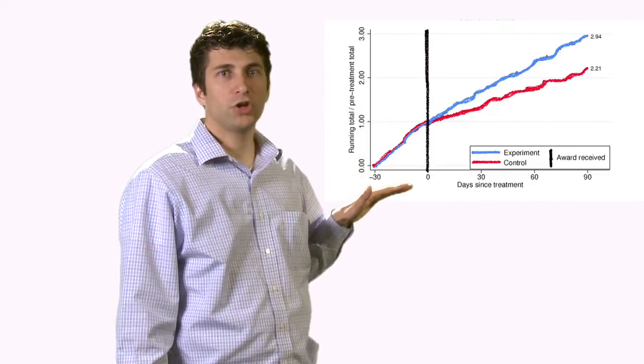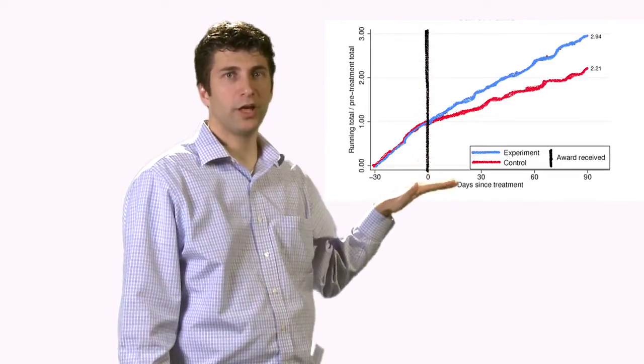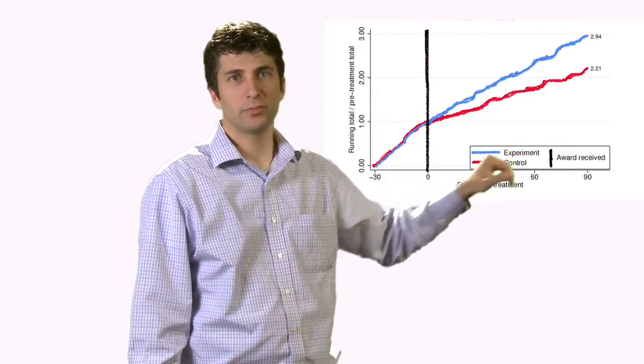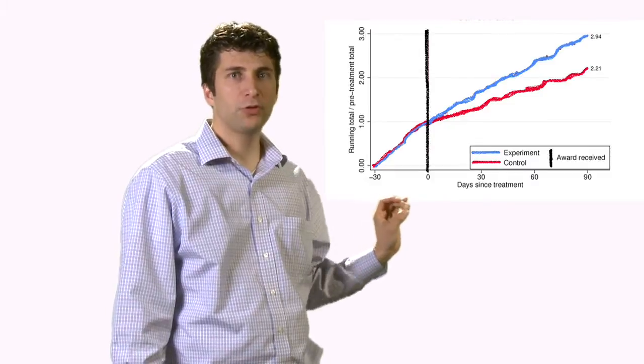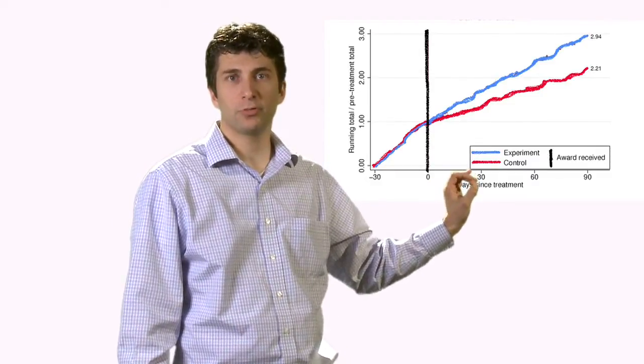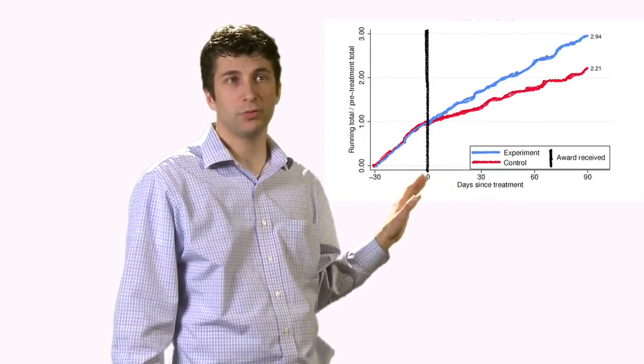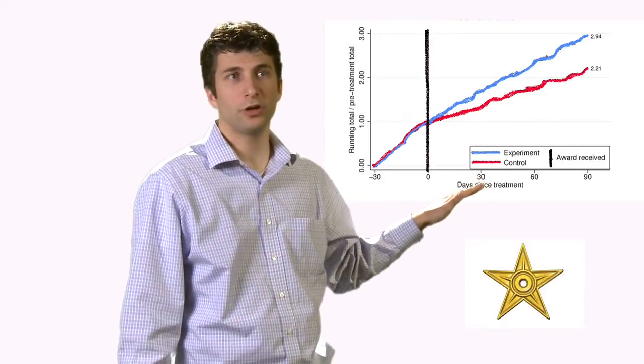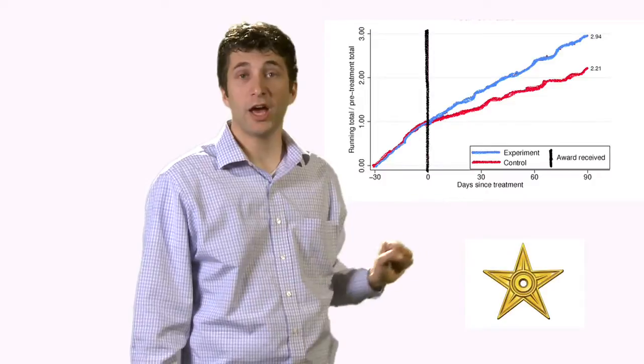And what we see is that the cumulative productivity goes up to the point where we give the barn star, this vertical line over here, and then increases but only slightly. This is contrasted to the blue line, which up to the beginning of the barn star overlaps with the red line because they are identical groups and because nothing has distinguished these people yet. But then the people in the blue group who do get our barn star, they exhibit heightened levels of productivity as indicated by this higher curve.